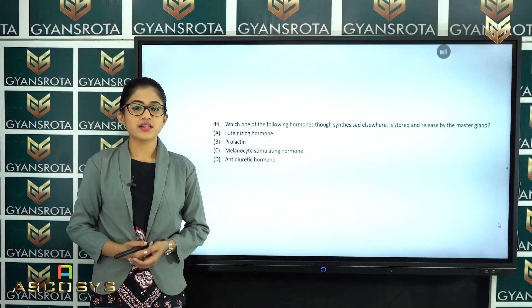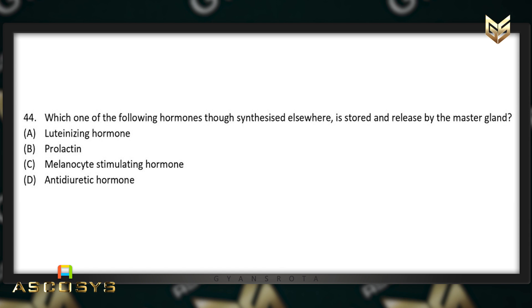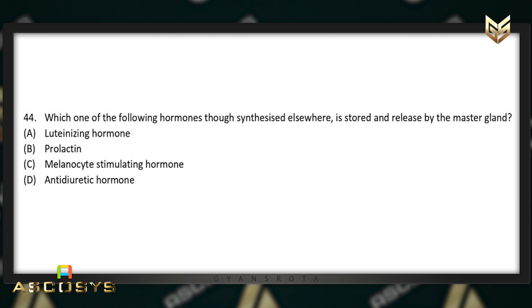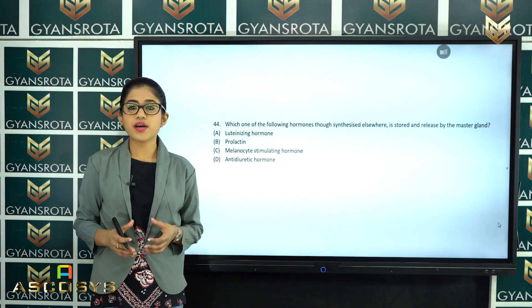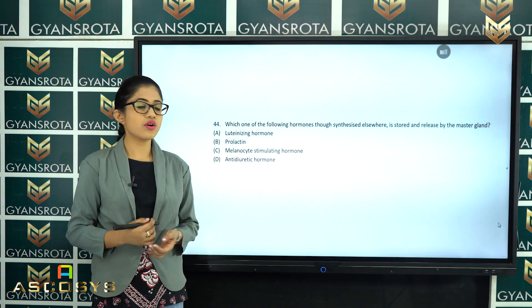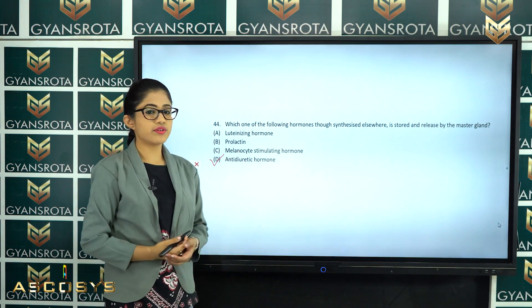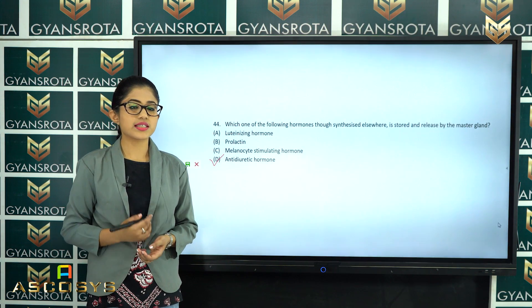The next question is question number 44. Which one of the following hormones, though synthesized elsewhere, is stored and released by the master gland? Options: luteinizing hormone, prolactin, melanocyte stimulating hormone, or anti-diuretic hormone? From the chapter Chemical Coordination and Integration, the hormone synthesized elsewhere but stored and released by the master gland (posterior pituitary) is the anti-diuretic hormone. Option number 4 is the correct answer.